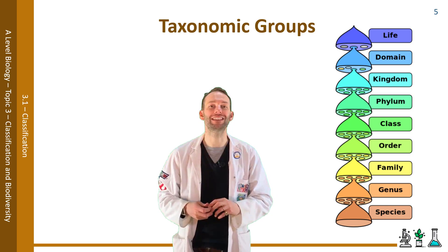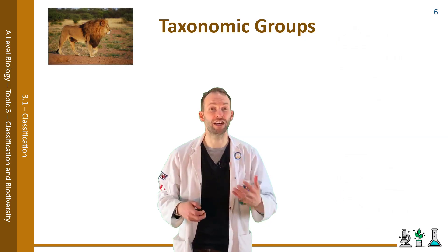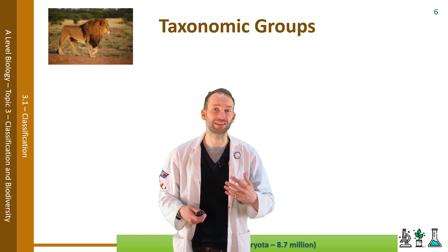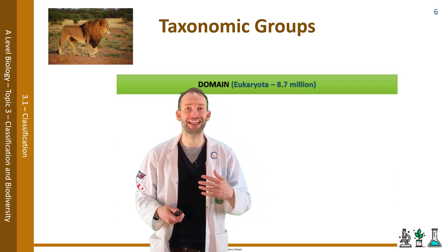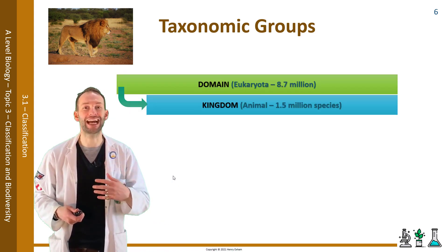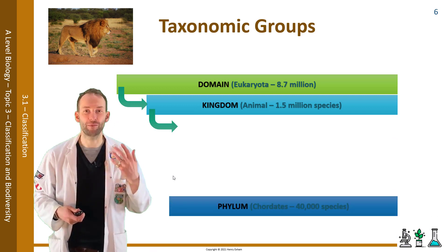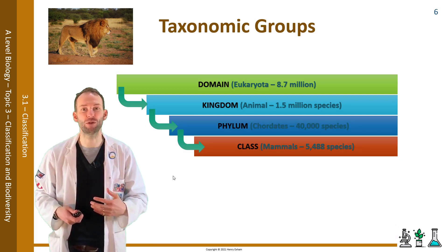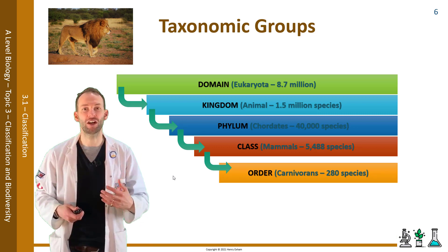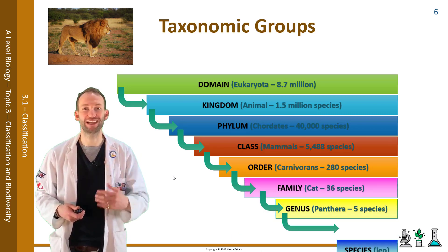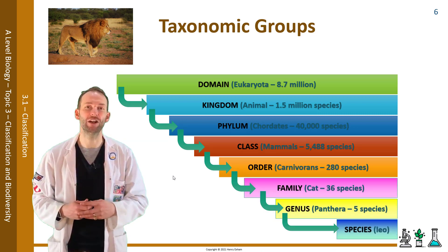If we look, for example, at the lion, we can classify it like this: its domain is eukaryota, or eukaryotes; then into the animal kingdom; the chordates, which are the vertebrates; it's a mammal; carnivore; it's a cat; panthera is the genus; and the species name is leo.